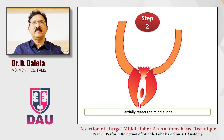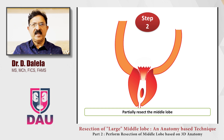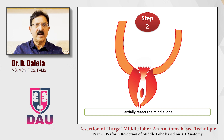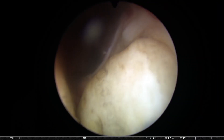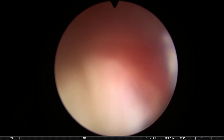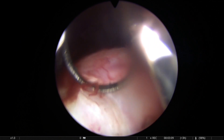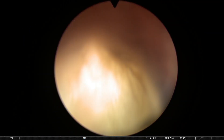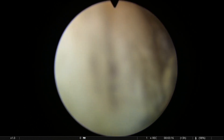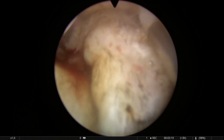The next step would be that whatever is the top part of the middle lobe, you resect that first. Don't resect the middle lobe whole completely — resect the top two-thirds which is protruding into the bladder lumen. Because you have cut two lateral grooves, it has partly devascularized the middle lobe. In this video, you will see that you can resect the top of the middle lobe quickly chip by chip, and it is not bleeding too much because you have already controlled the bleeders from the lateral side.